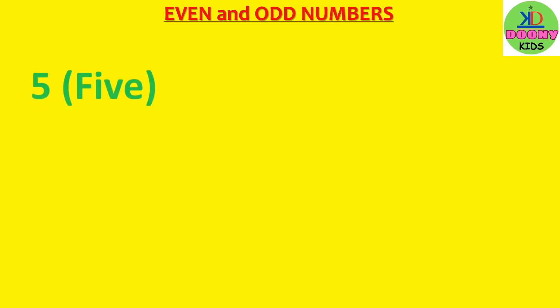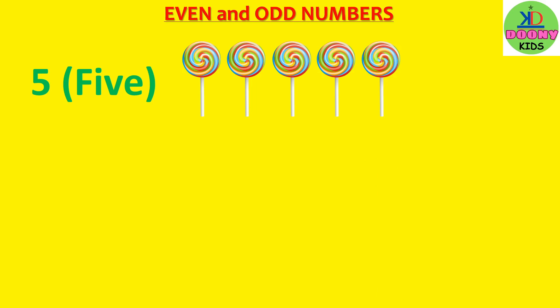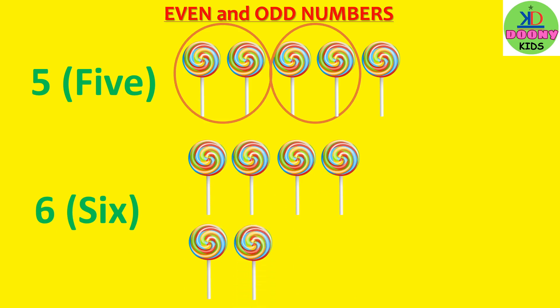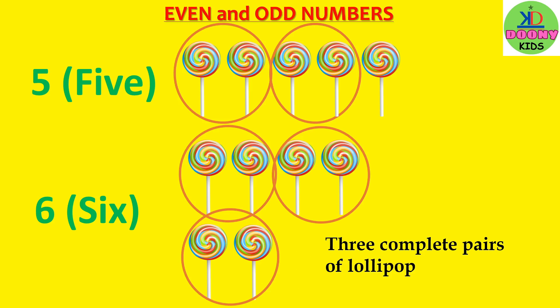5 — 1, 2, 3, 4, 5. Now we have to count the number of pairs: 1, 2 — there are incomplete pairs. 6 — 1, 2, 3, 4, 5, 6. There are 3 complete pairs of lollipop. So number 6 is an even number, and number 5 is an odd number.